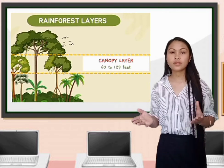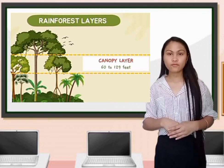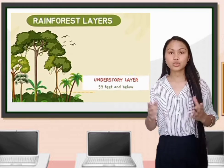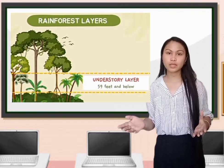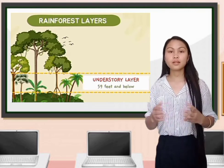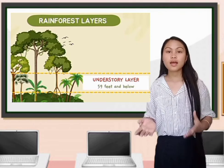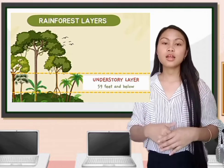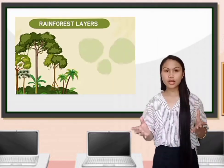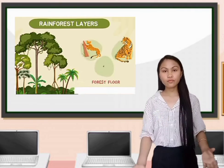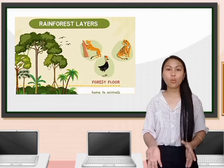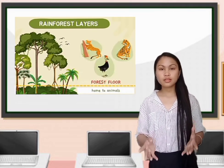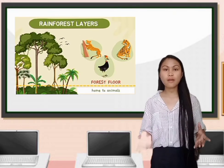The canopy contains the majority of living organisms like snakes, birds, and tree frogs. The next layer is the understory, which consists of shrubs, vines, young trees, and the trunks of the trees forming the canopy. It is around 59 feet below the canopy, where many insects are found, as well as snakes, lizards, birds, and many more — there is less sunshine in this layer. The last layer is the forest floor, the ground level, home to large animals like wild pigs, tigers, and jaguars. It receives the least amount of sunlight.